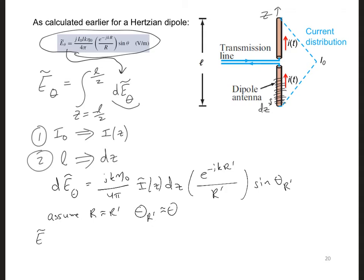Incorporating these into our expression for the total E from the entire dipole, we get j k η_0 over 4π r, times e to the minus j k r, times sine θ. We're integrating z from minus L over 2 to L over 2, integrating I(z) dz. We can solve this integral by finding the area under the current function, basically the area of the triangle, which is I_0 L over 2.